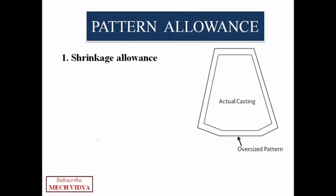Usually metals shrink during solidification, so we have to provide some extra dimension to the patterns so that after shrinkage the casting's actual size can be achieved. So basically there are three types of shrinkages. First, the liquid shrinkage is the contraction of liquid from the pouring temperature to the freezing temperature.